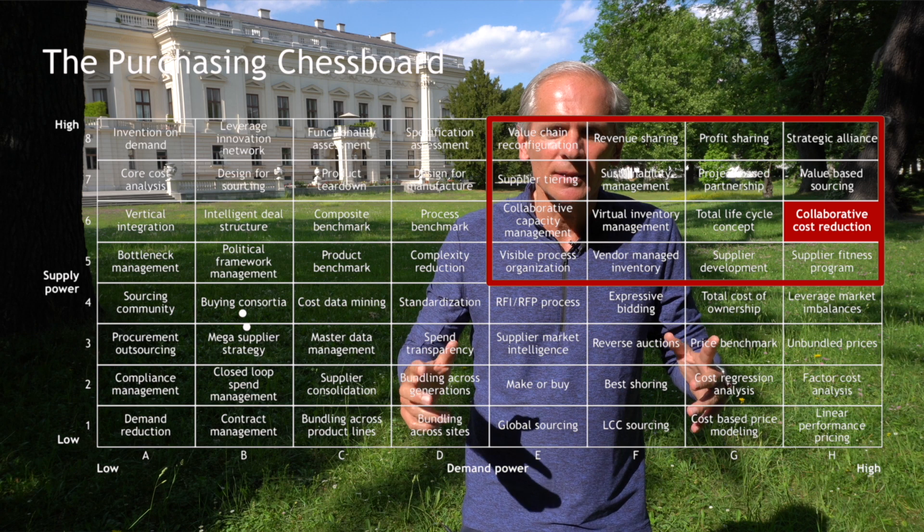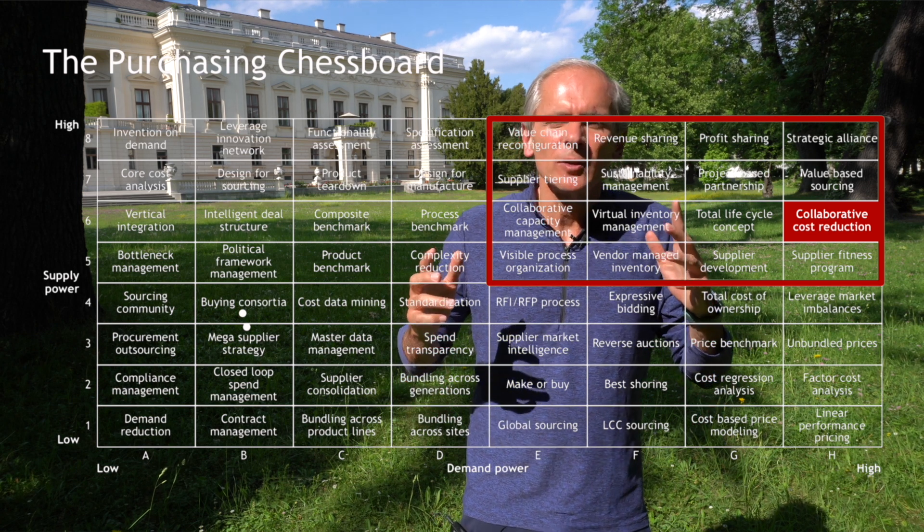Now let's take a look at the top right quadrant. This is where you enjoy high demand power but are dealing with suppliers that also enjoy high supply power. Approaching those suppliers with cost regression analysis won't do much good — you need their cooperation for finding a win-win solution. You can only really get savings from them if they also benefit from it. The method that best represents the top right quadrant is H6 collaborative cost reduction.